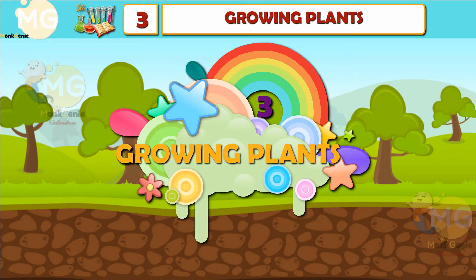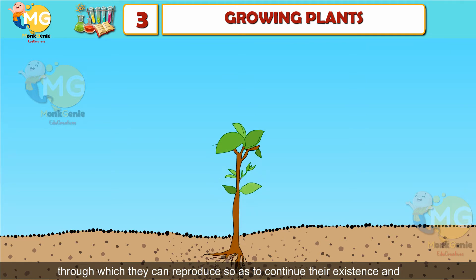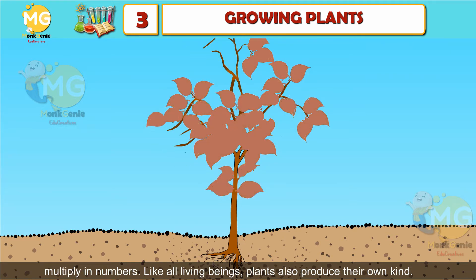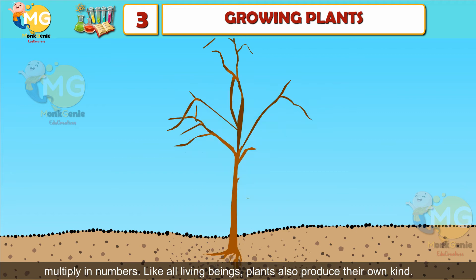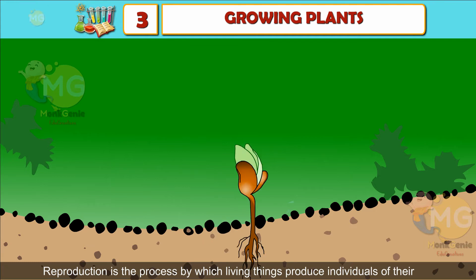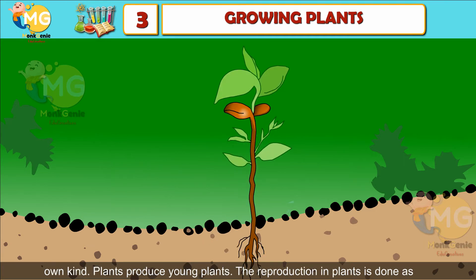Chapter 3: Growing Plants. All living things have a limited life span, therefore they have developed ways through which they can reproduce so as to continue their existence and multiply in numbers. Like all living beings, plants also produce their own kind. Reproduction is the process by which living things produce individuals of their own kind.